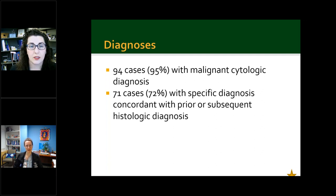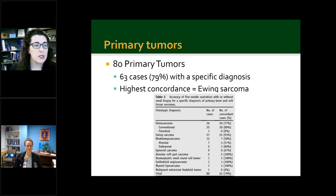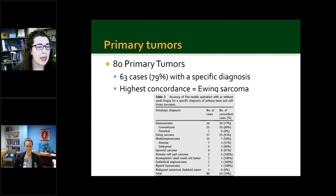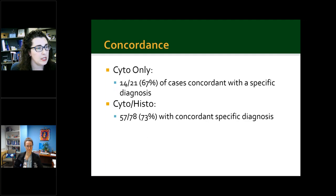Aside from mandatory second review, we have a low threshold to show challenging cases around. Here's a breakdown of the primary tumors in the cohort. There were 80 primary tumors, and 63% of these cases had a specific diagnosis. The highest concordance was within Ewing sarcoma, with osteosarcoma as a close second. Overall, there was high concordance across the dataset.